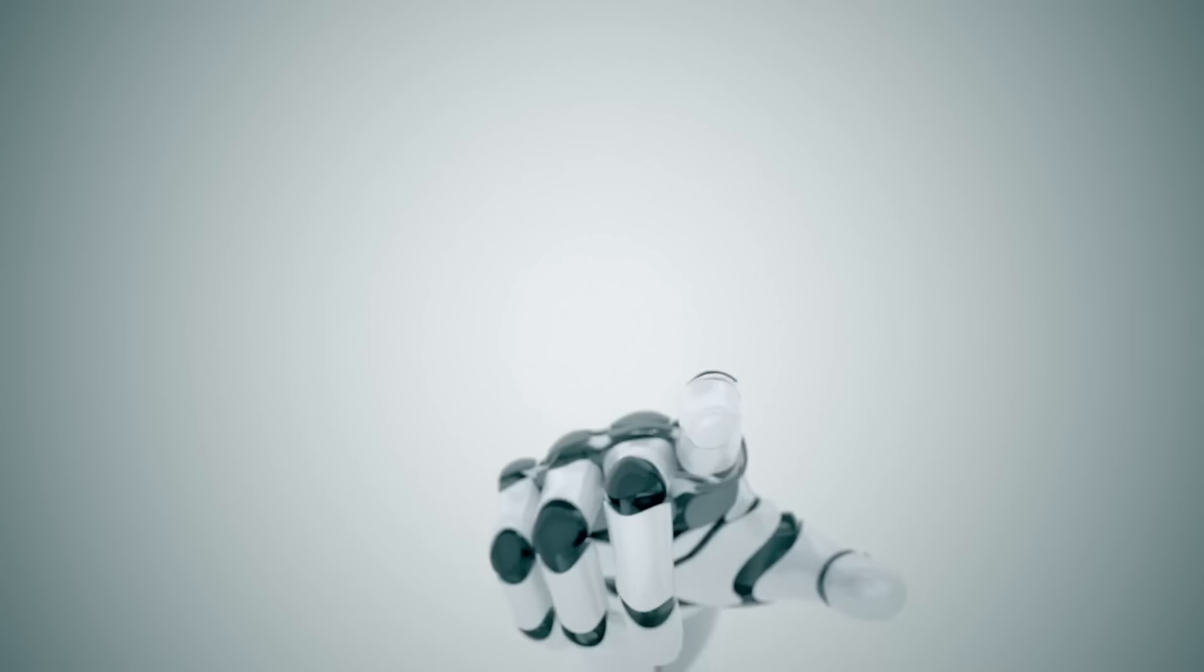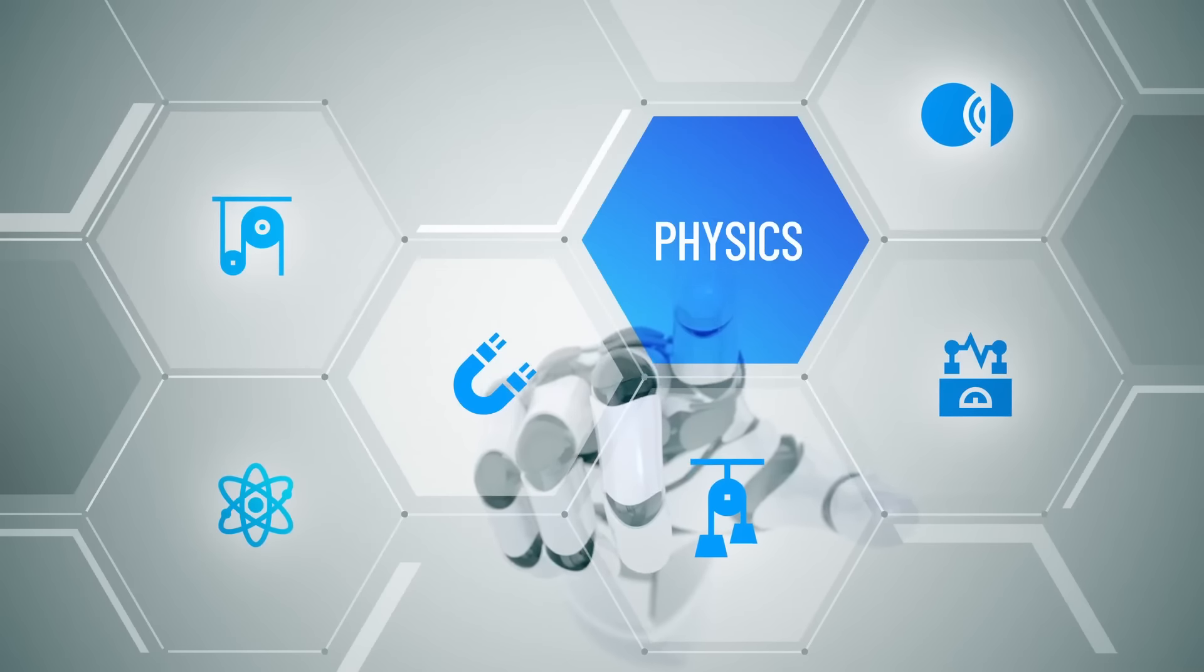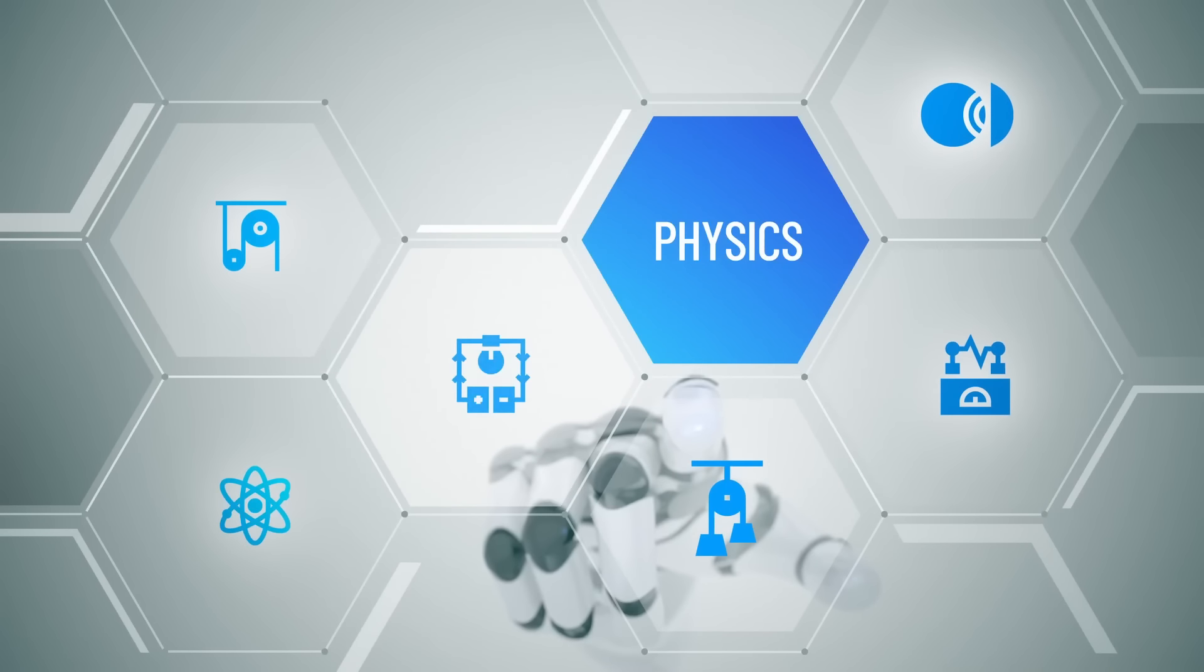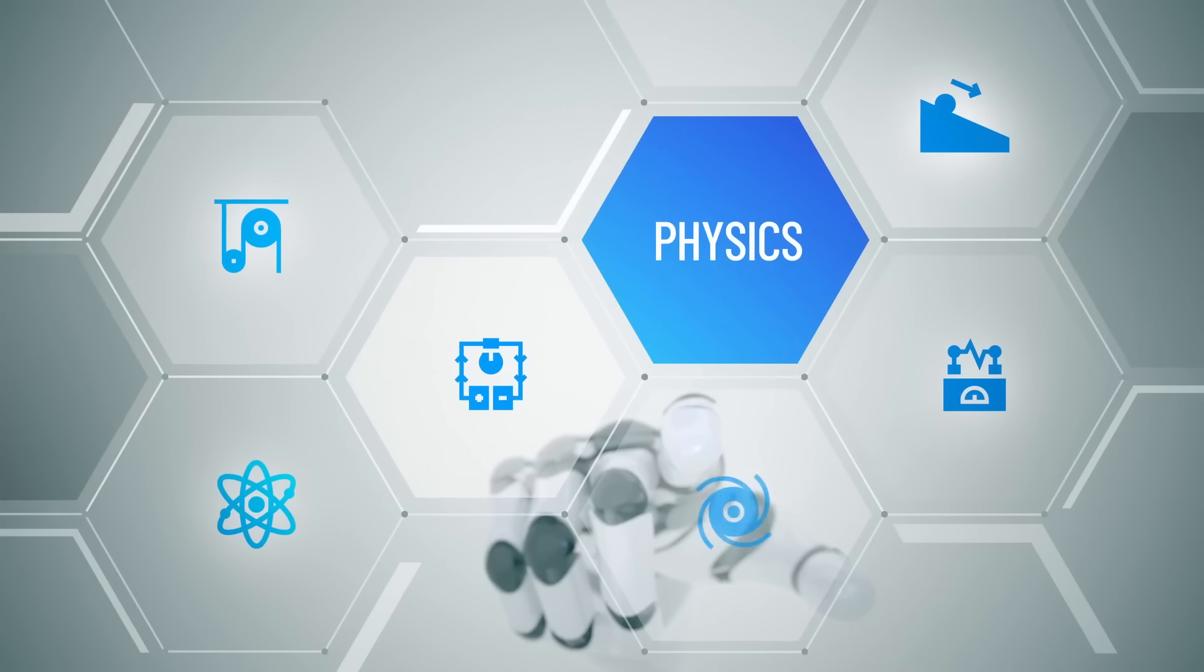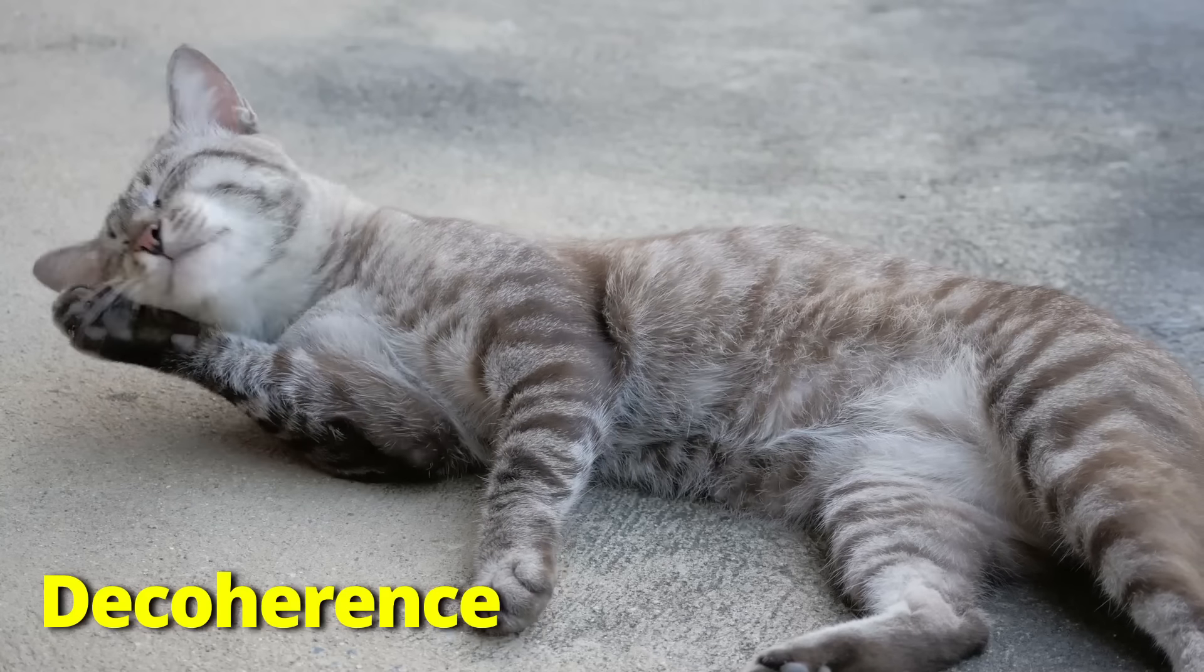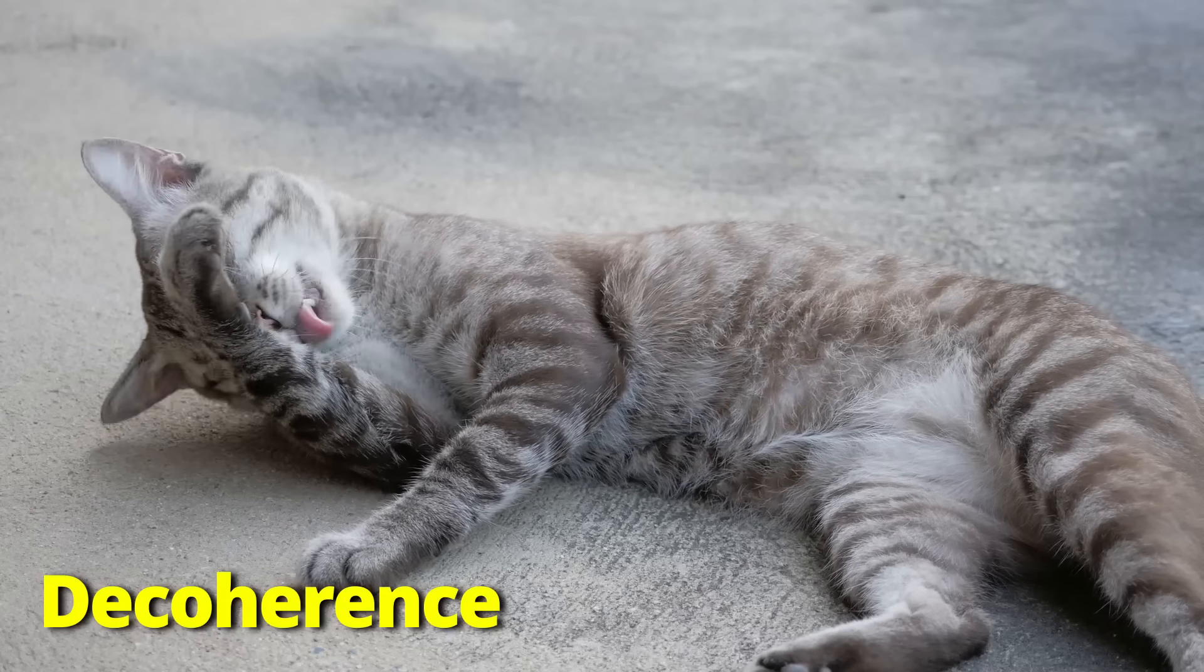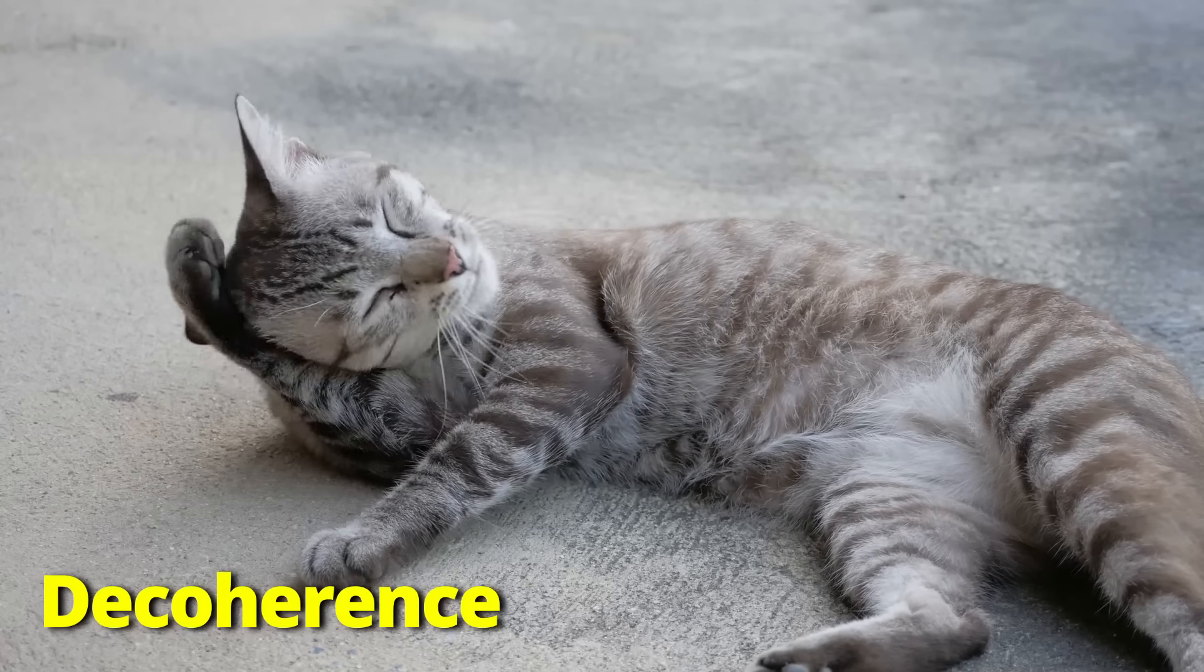Now, since Schrödinger's time, physicists have solved part of this riddle. They've figured out why it's basically impossible to measure the quantum properties of large things like cats. It's because of a process called decoherence that has the effect of spreading quantum links into the environment until you can no longer tell they exist.